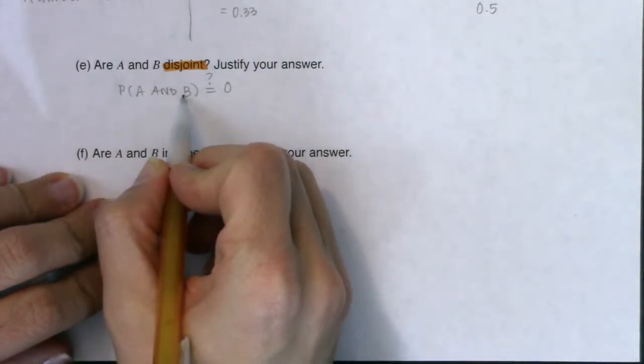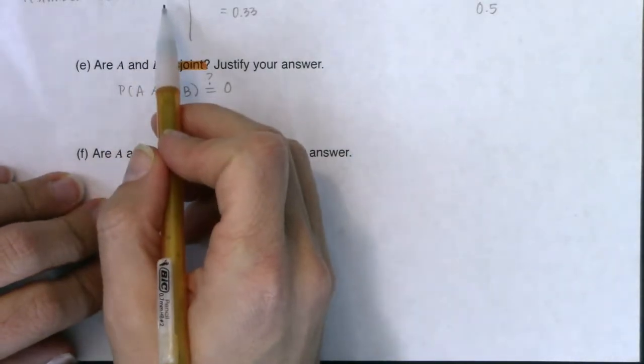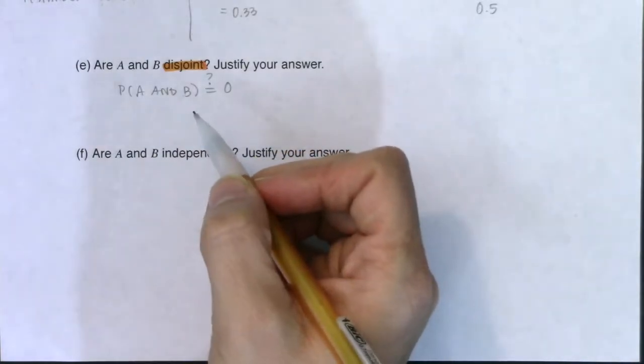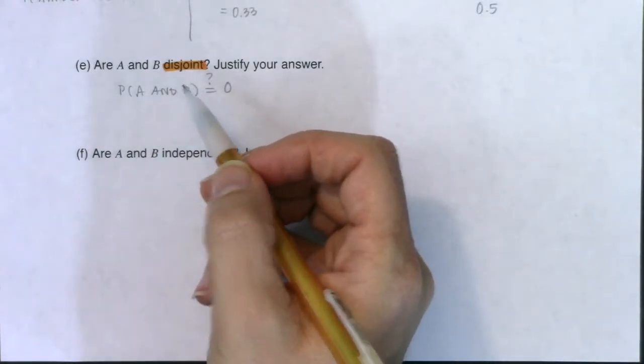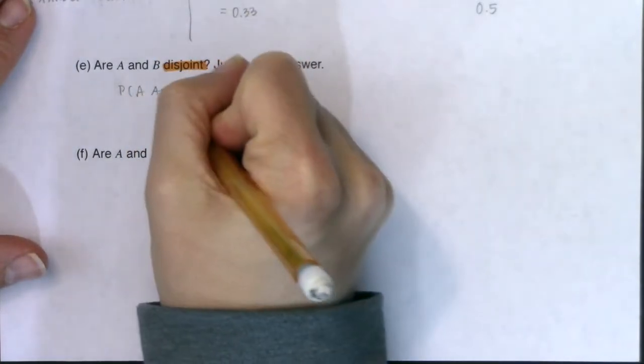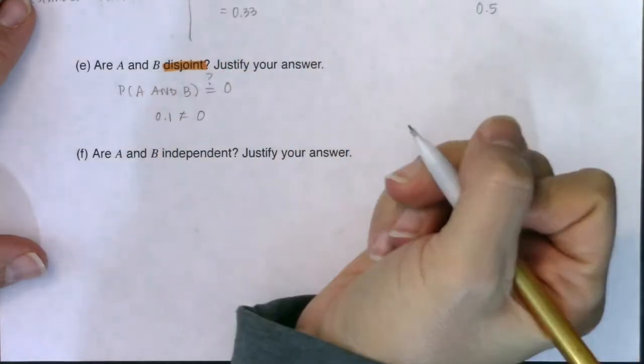So if I look at this, I got the probability of A and B. All right, we talked about this in part C. A and B, they overlap at one number. All right, 6 is common to both of those events. And the likelihood that you roll a 6 is 10% of the time. That is not equal to 0.